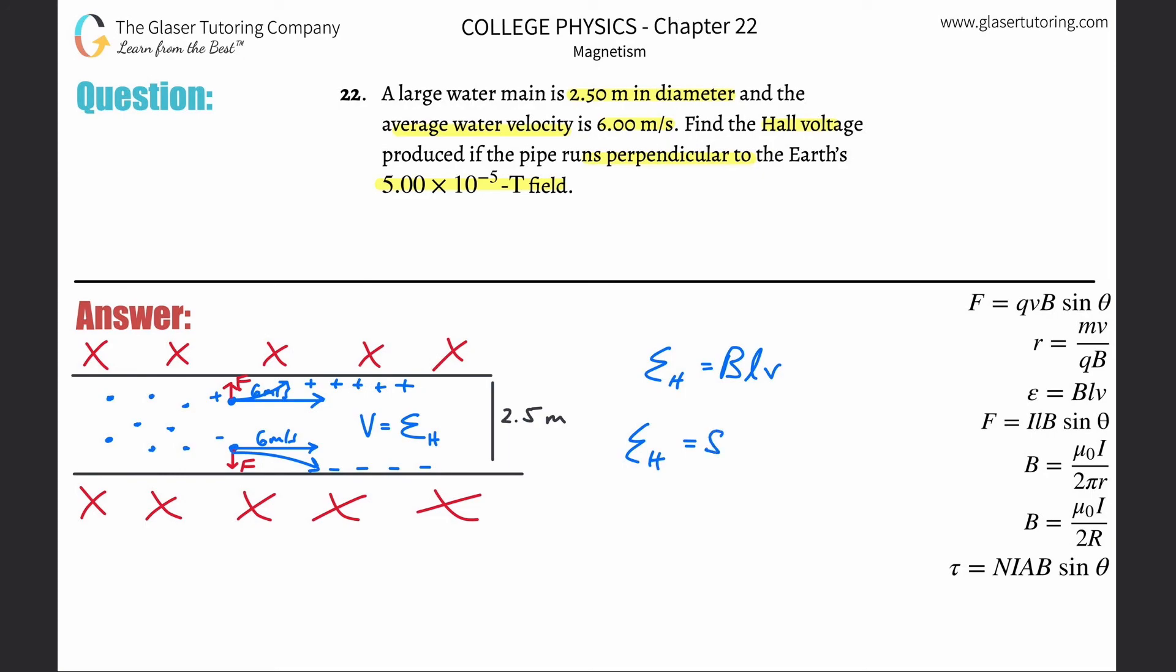The magnetic field they told us was 5 times 10 to the minus fifth. The distance, the separation here, is going to be 2.5 meters. Everything's in the standard unit, and V represents the velocity, so the velocity was 6 meters per second. Take out the handy dandy calculator. So this is 5 times 10 to the minus fifth times 2.5 times 6, which equals 7.50 times 10 to the minus fourth. And that is in volts, or Newton meter per Coulomb. That's the voltage.